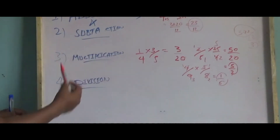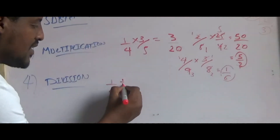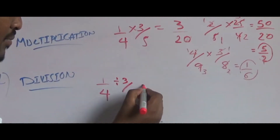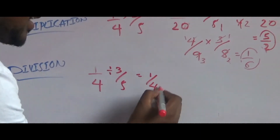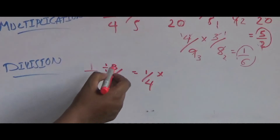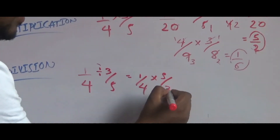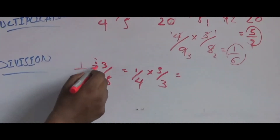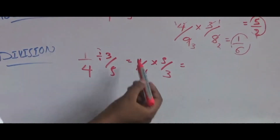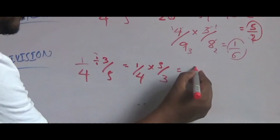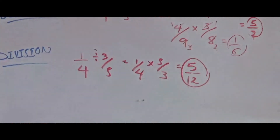Division is multiplication of the opposite. If you want to say 1 over 4 divided by 3 over 5, you flip and multiply: 1 over 4 times 5 over 3. So 1 times 5 is 5, and 4 times 3 is 12. This means it's 5 over 12.